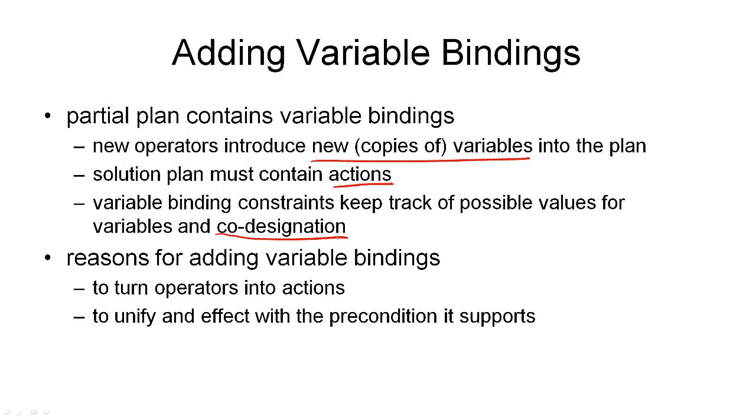Again, when we add variable bindings as a plan refinement operation to our partial plan, we want to stick to the least commitment principle. So, we only want to add variable binding constraints when we have a good reason for doing so. And the most important reason for adding variable constraints is, of course, that we need to turn all the operator instances, the partial actions in our plan, into fully ground actions. But this is not the only reason.